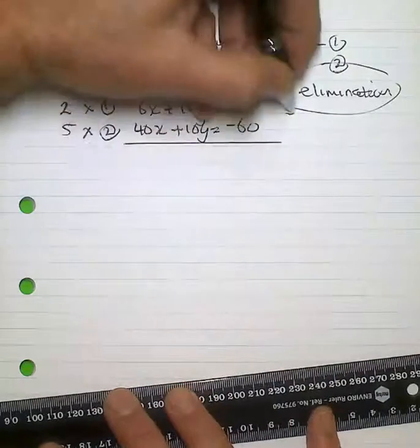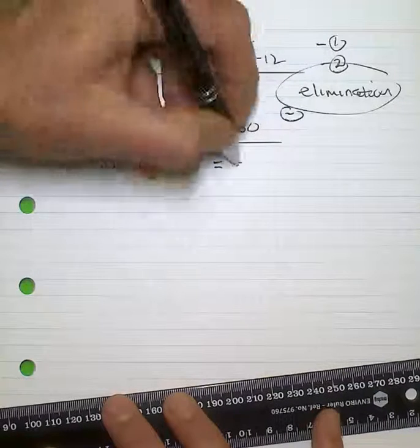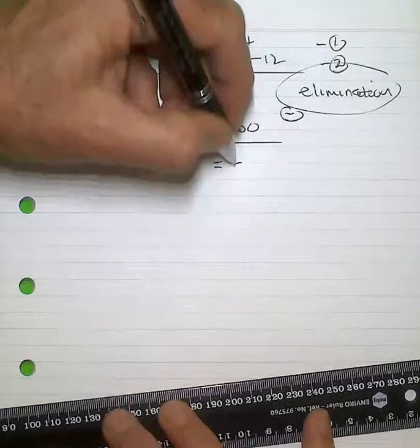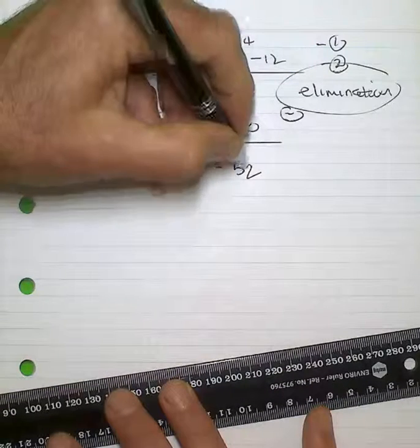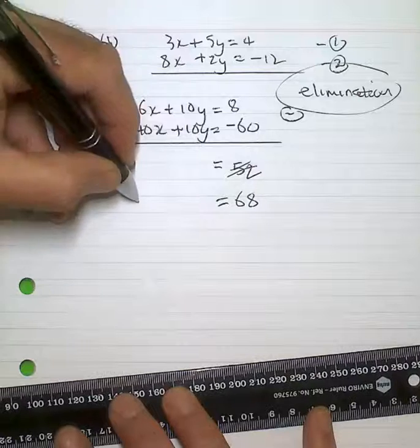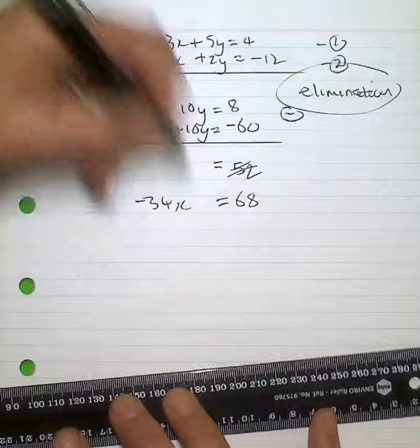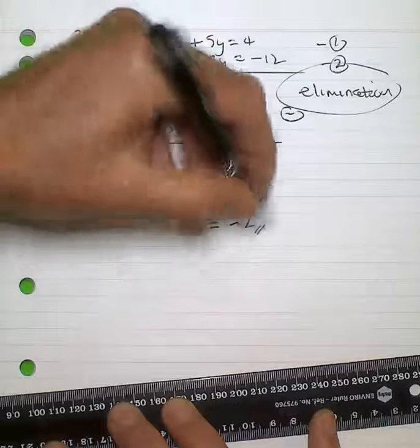I'm now going to subtract those two from each other. So -8 take 60 will give me, actually, positive 68. And I'll have -34x = 68, or x = -2.